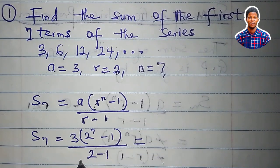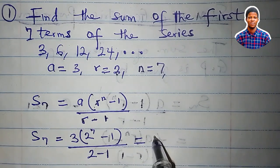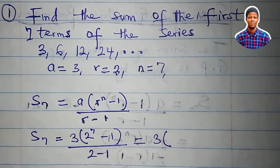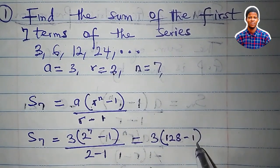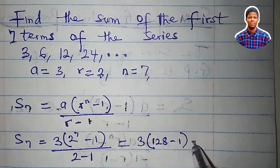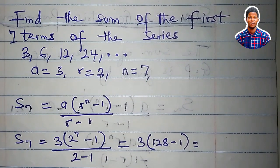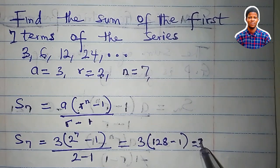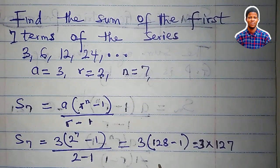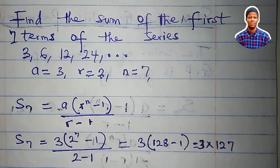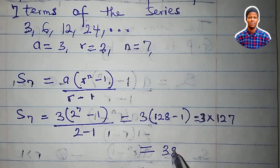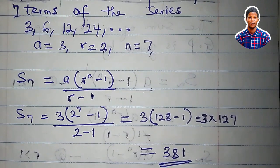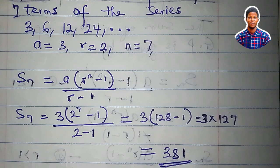2 - 1 = 1, so the denominator is 1. 2^7 = 128, and 128 - 1 = 127. So we have 3 × 127 = 381. The sum of the first seven terms of the series 3, 6, 12, 24, ... is 381.